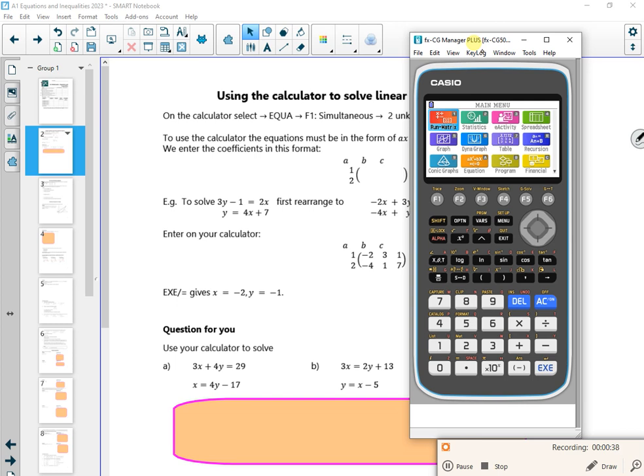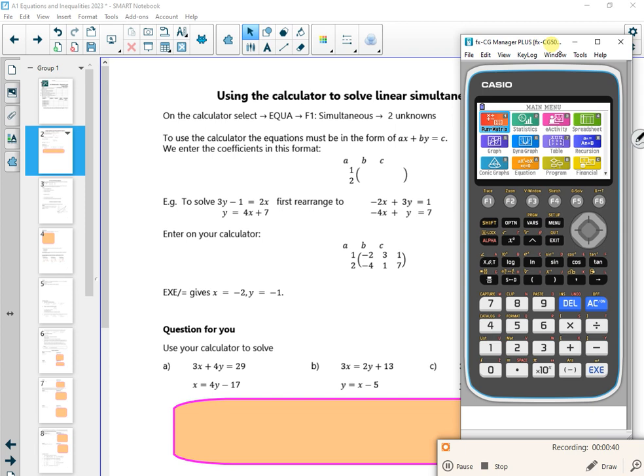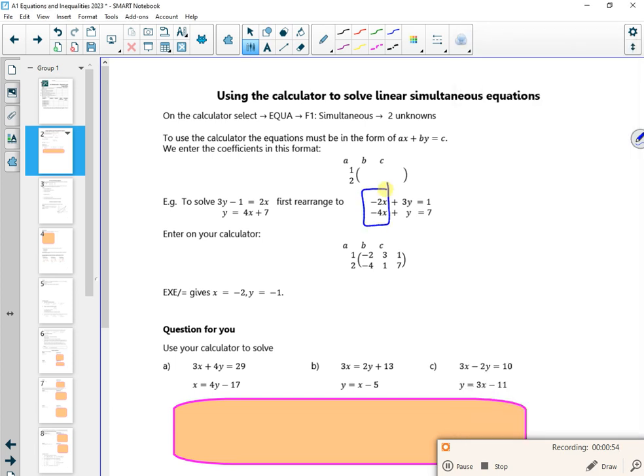So it says, first of all, you've got to rearrange them. So 3y minus 1 equals 2x, and y equals 4x plus 7. I have to rearrange it. I'm going to write on the board. If you look, it's x's, y's, equals a number.